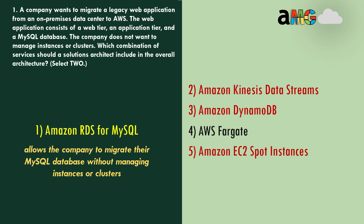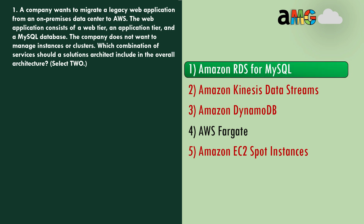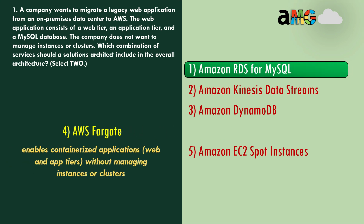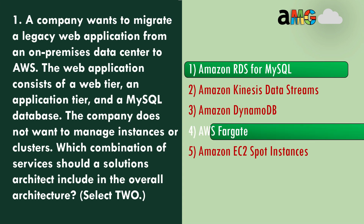Option 1 — Amazon RDS for MySQL allows the company to migrate their MySQL database without managing instances or clusters, so this is the correct answer. Another correct answer is AWS Fargate, because it enables containerized web applications and app tiers without managing instances or clusters. Amazon RDS for MySQL and AWS Fargate are the correct answers for this question.